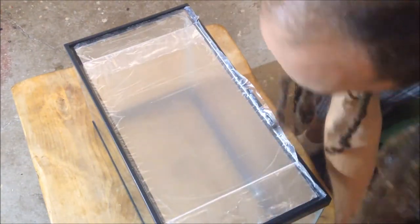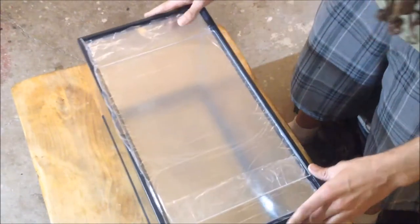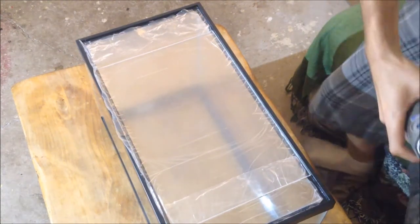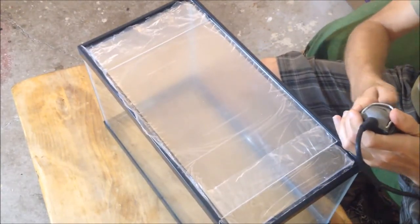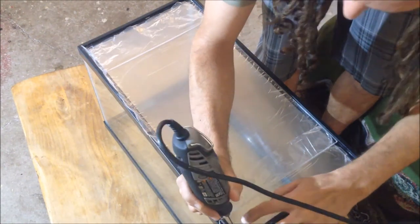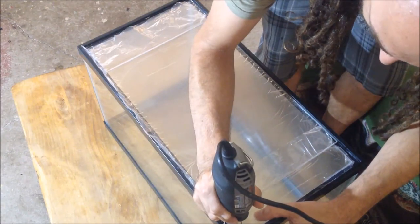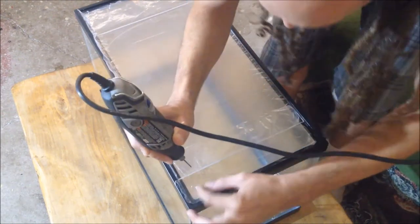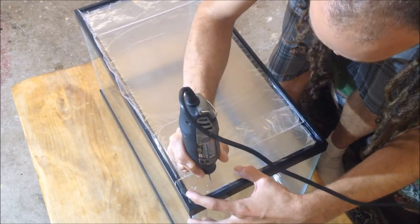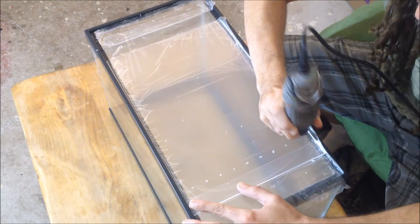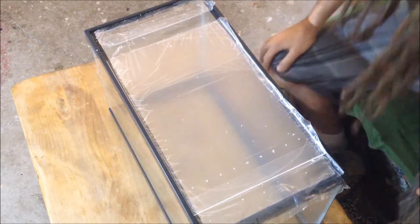All right, now we got those on there. Now we can do our pilot holes using our Dremel tool. Okay, all of our pilot holes are in, ready to go. And now we'll break out the bigger drill and drill the holes.